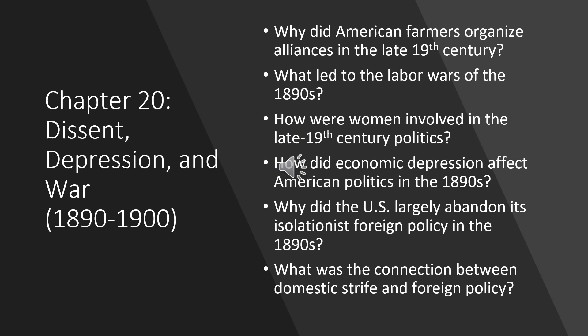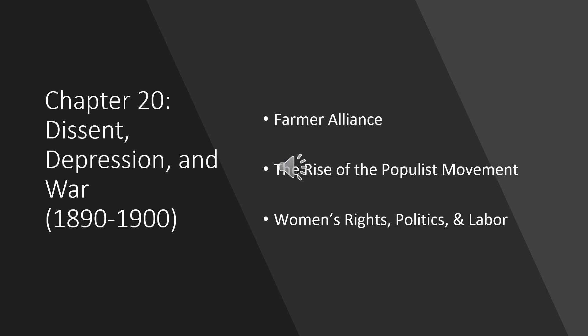Greetings, everyone. This is Professor Miller. We are going to be discussing Chapter 20, American History 220 today. Chapter 20 covers dissent, depression, and war, focused on labor during the Gilded Age. At the end of Chapter 20, you're supposed to be able to answer these questions, and we're going to touch on many of these things during this chapter, but again, this material is meant simply as a complement to what you have in the textbook.